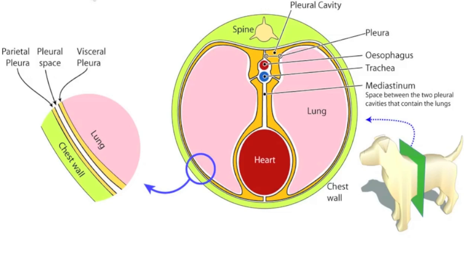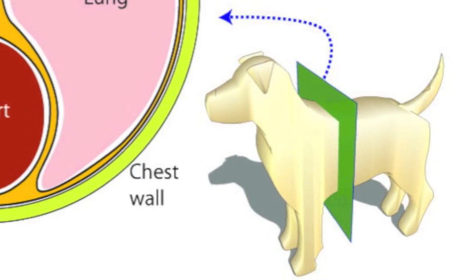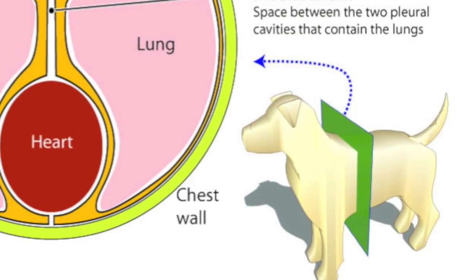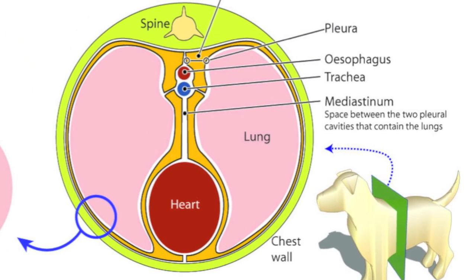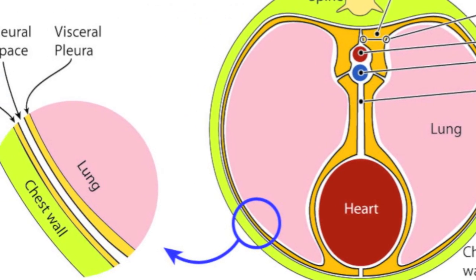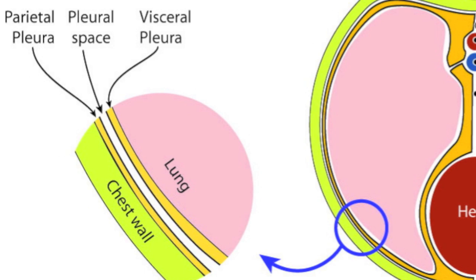To understand a pneumothorax, we need an understanding of the lungs and how they function. This is a brief overview of the lung and where it sits. The lungs are within the chest cavity. The chest wall is lined by the parietal pleura, and then we have a space called the pleural space. There is a small amount of fluid in this space, which we need for normal respiration. Alongside that is the visceral pleura, which basically protects the lungs. That's the anatomy we're going to focus on when talking about pneumothorax.